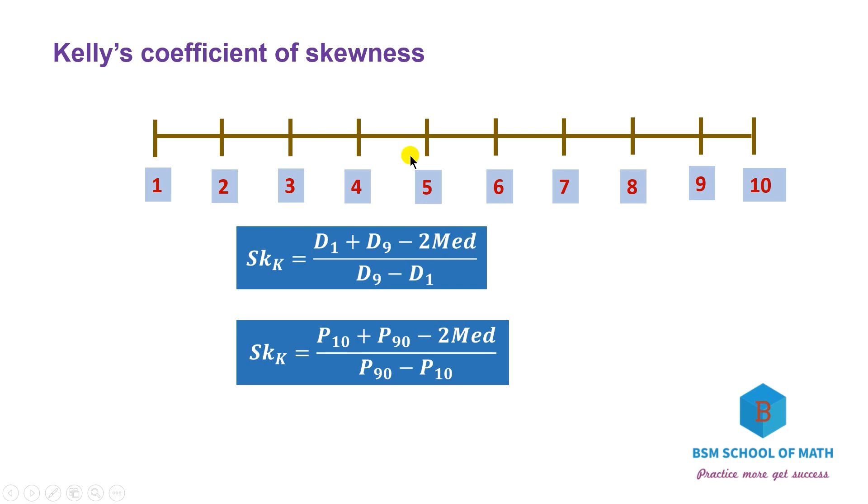The median is D5, so this is D5. We can substitute the median as D5 in the formula.